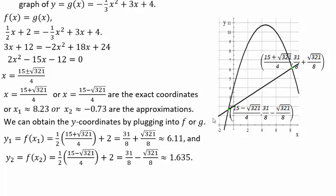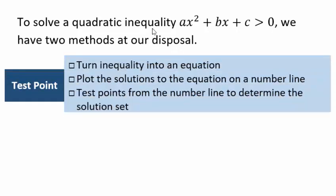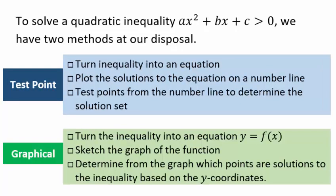There are many applications of solving quadratic equations. To solve the quadratic inequality ax squared plus bx plus c greater than 0, we have two methods. In the first method, solve the equation equal to 0, use those critical points, plot them on a number line, do test points, and determine which intervals satisfy the inequality. In the graphical method, plot the parabola; where it hits the x-axis are points where y equals 0. To find where y is greater than 0, look for where the parabola is above the x-axis.